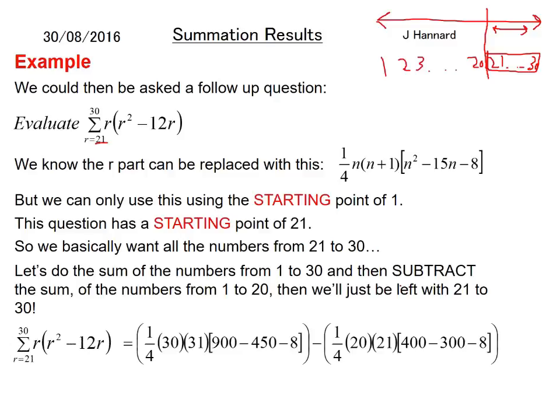So that equals, putting in a 30, we want a quarter of 30 times 31 times that, and then minus putting a 20 in, so quarter times 20 times 21 times that, which equals 93,105. You can check that on a calculator—I believe I did—but if I'm wrong please tell us in the comments below. But that is the theory of it, and you can now tackle any summation question using the standard results.